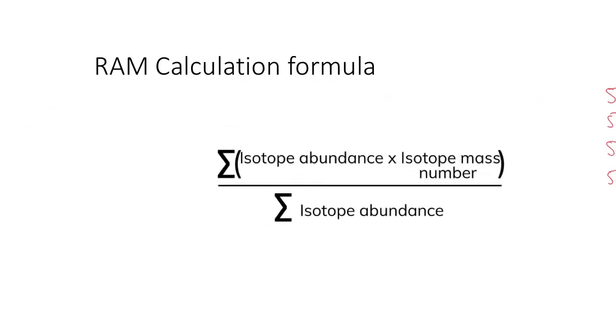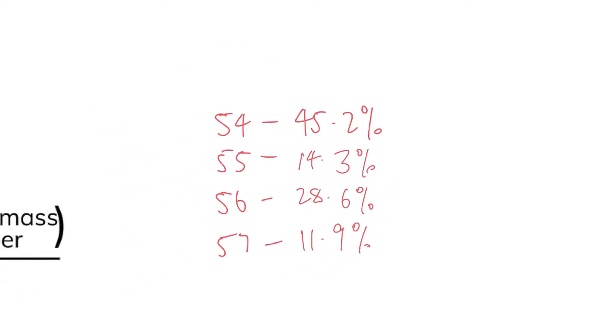So if you're not familiar with this symbol here, it means the sum of. So the sum of the isotopic abundances, which means their percentage, times the isotope mass number, divided by the isotope abundance, which is effectively 100, which is the total percentages. So here's that example that we did earlier with those percentages saved under the letters B, C, D, and E.